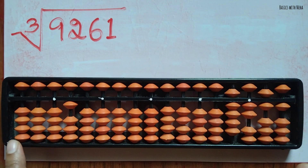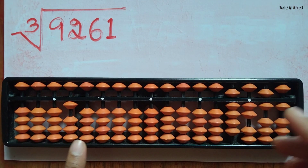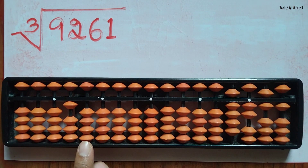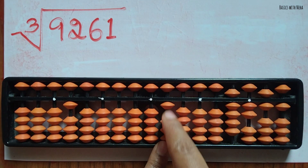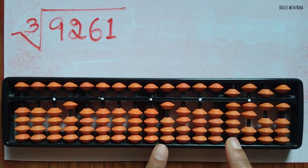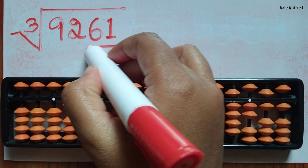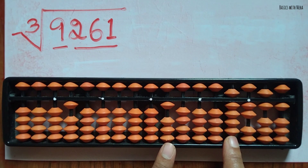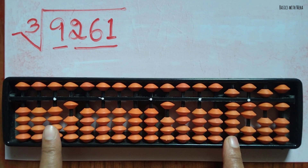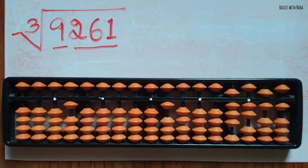In the cube part we are going to take the number 9261. You have to take four rods for the root number. I'm using the last rod here, and on the sixth rod I'm going to place one. Since I have placed one in the square number, we know that for cube numbers we group into three: so it is 261, 009. Since I have placed one in both root number and square number, I'm going to remove one bead.